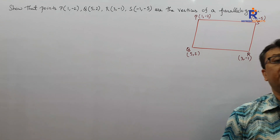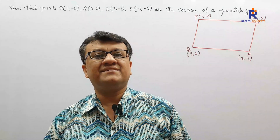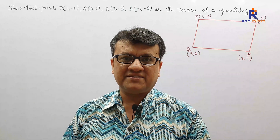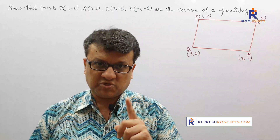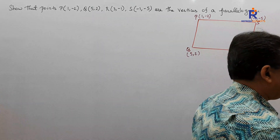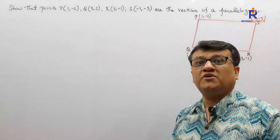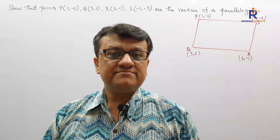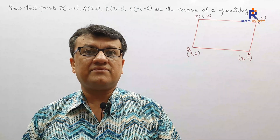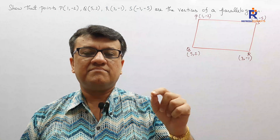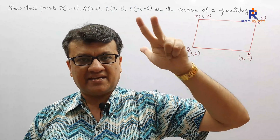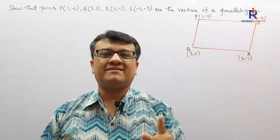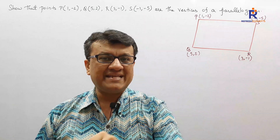The question immediately arises: sir, this case applies to rectangles, squares, and rhombuses also. Your question is correct. At this juncture, since rectangle, rhombus, and square also have the same property, can't we call it a rectangle or square? Children, every square, every rectangle, every rhombus is a parallelogram — but all parallelograms are not necessarily a rectangle, square, or rhombus.